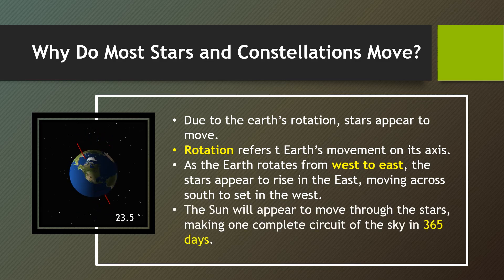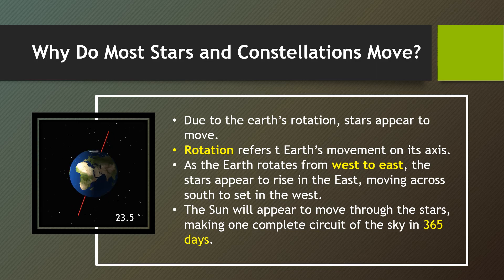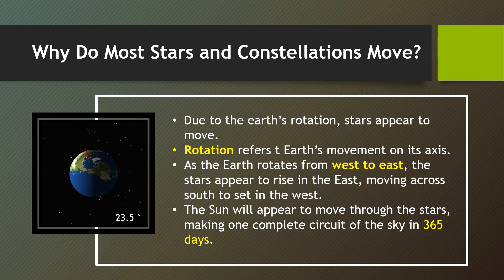The sun will appear to move through the stars, making one complete circuit of the sky in 365 days.